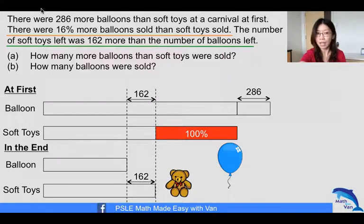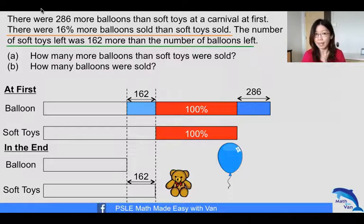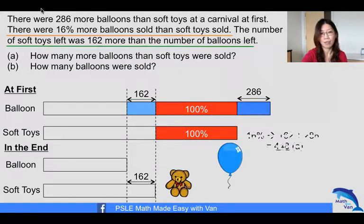And then we are told these two blue portions actually refer to the additional number of balloons sold, and that gives you the 16%. And you have answered Part A easily with that model. Then everything is simple because all your solutions can be found from the model itself.